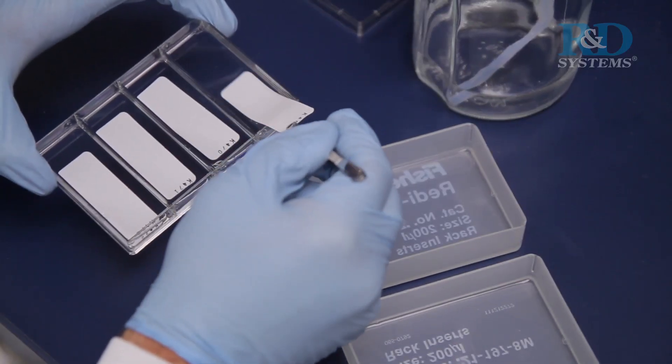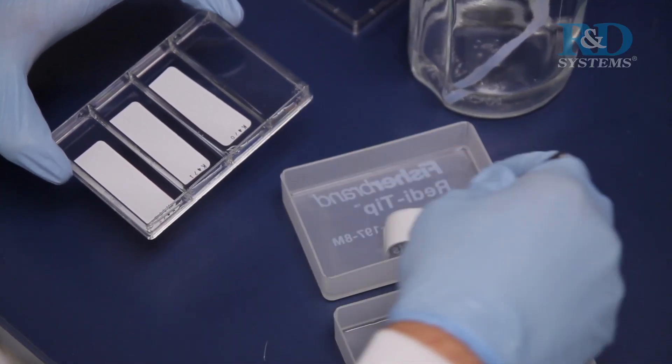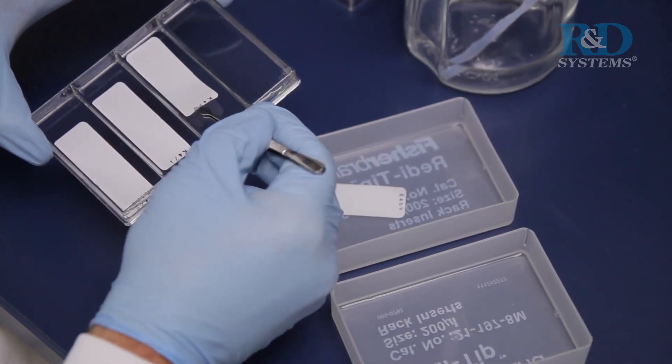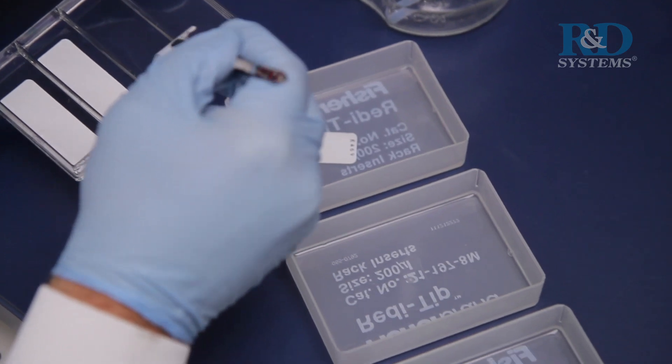Next, carefully remove each membrane from the 4-well multi-dish and place into individual plastic containers with 20 milliliters of 1x wash buffer.